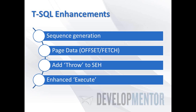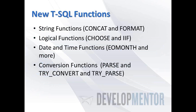Now for core engine enhancements — and notice Microsoft didn't mention these in their value prop, focusing instead on breakthrough insights, mission critical, and cloud. But I'm old school and think T-SQL enhancements matter: the new sequence generator, a new way to write paging, adding THROW to structured exception handling, and enhancements to EXECUTE. There are also new SQL functions like CONCAT, FORMAT, CHOOSE, IIF, new date/time functions, and conversion functions.